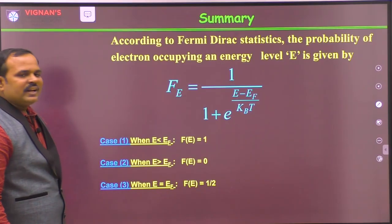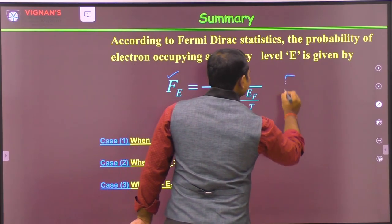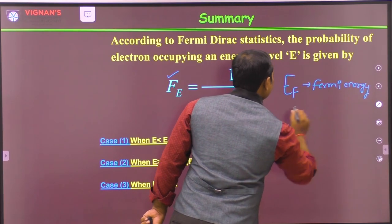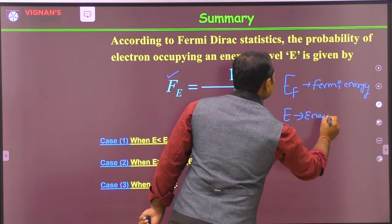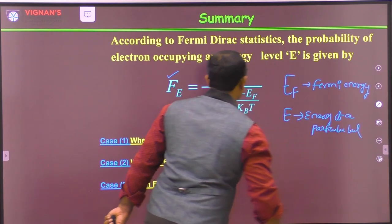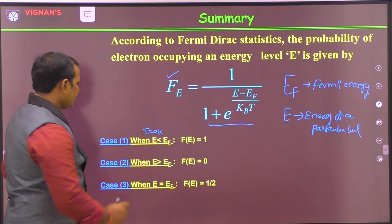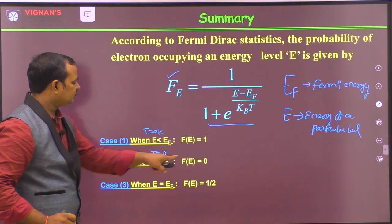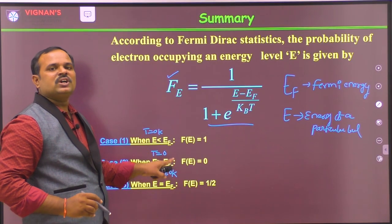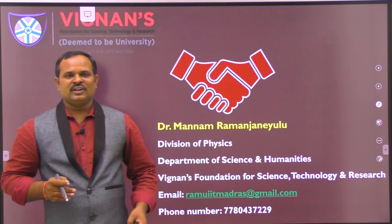Let us summarize this class. The Fermi-Dirac distribution function is F(E) = 1 / (1 + e^((E − EF) / kBT)), where EF is the Fermi energy and E is the energy of the level we are examining. Case 1: E < EF at T = 0 K, F(E) = 1. Case 2: E > EF, F(E) = 0. Case 3: E = EF at T ≠ 0 K, F(E) = 1/2. The highest occupied energy level at 0 Kelvin is called the Fermi energy level. Thank you for your attention.